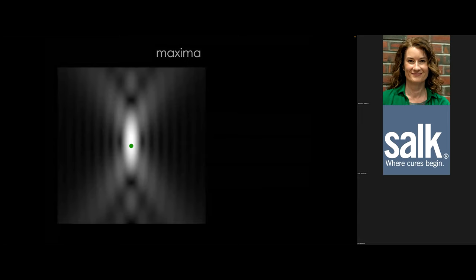When doing microscopy, we generally focus on the central maximum, where the majority of intensity is. Looking at the axial PSF, the maximum is elongated in Z. The rings surrounding the central maximum are there because of diffraction and interference in all directions, but in Z the blurring is considerably more pronounced.